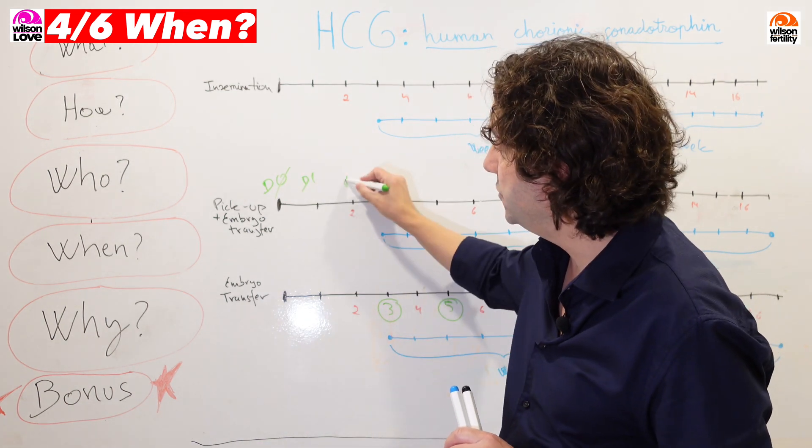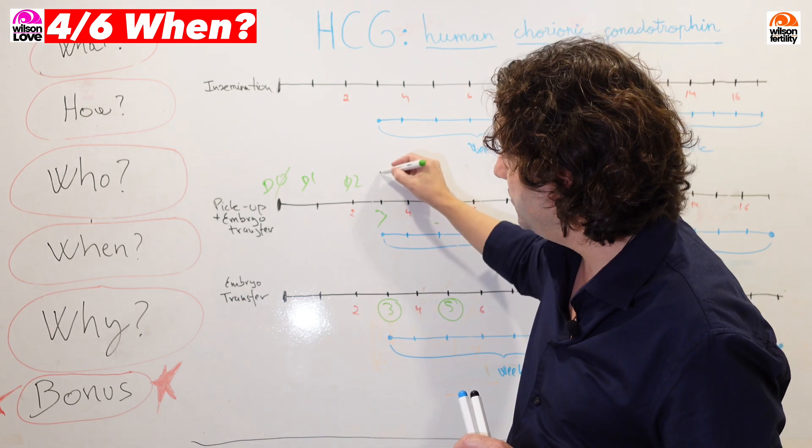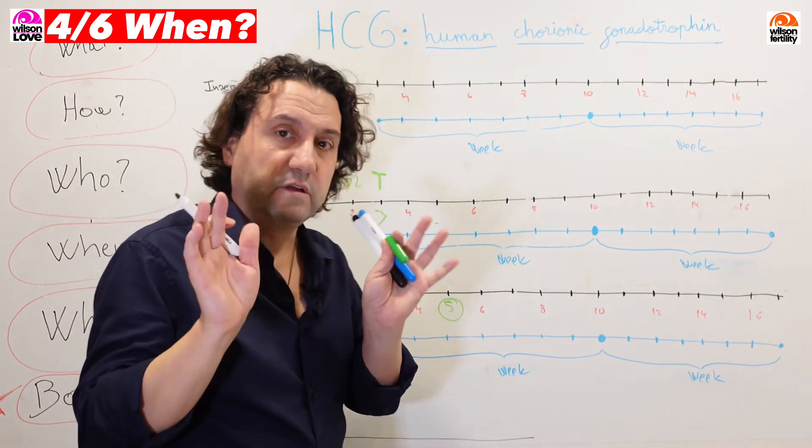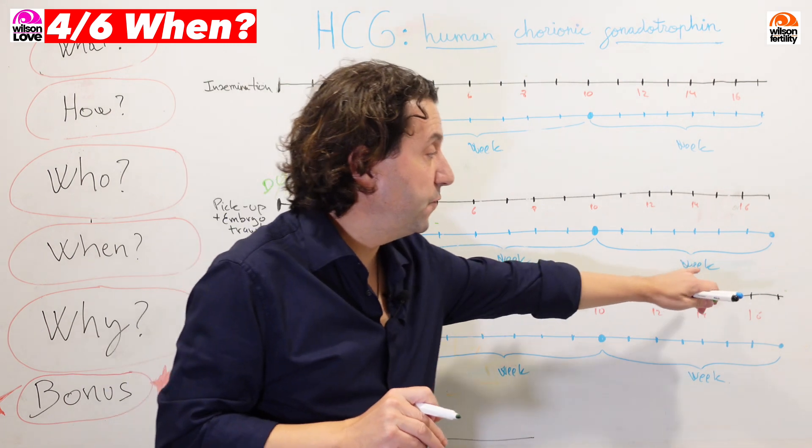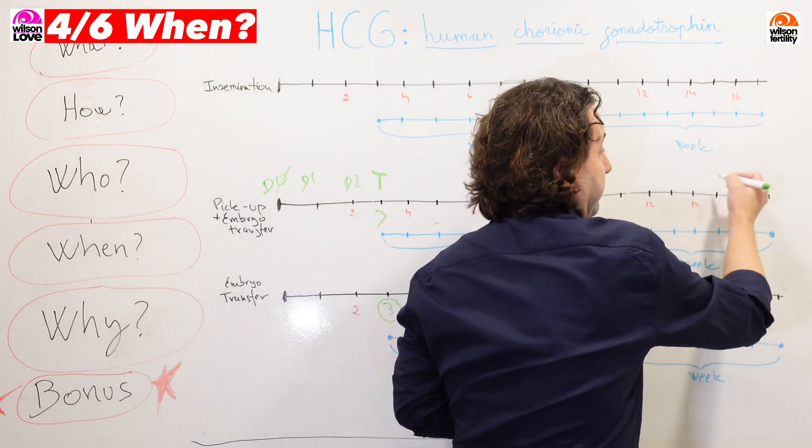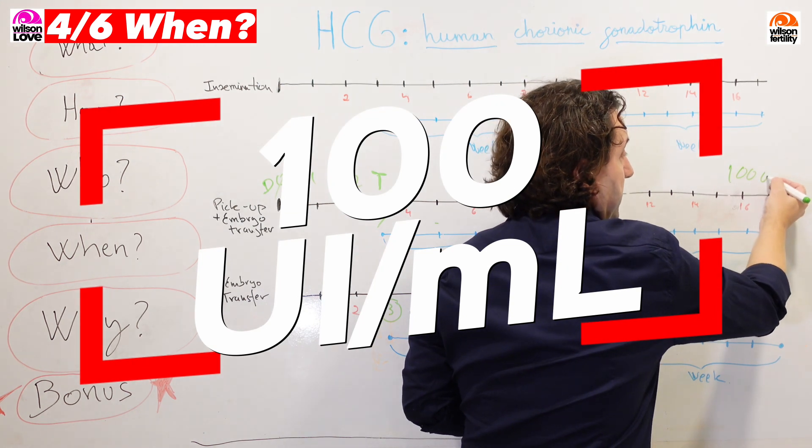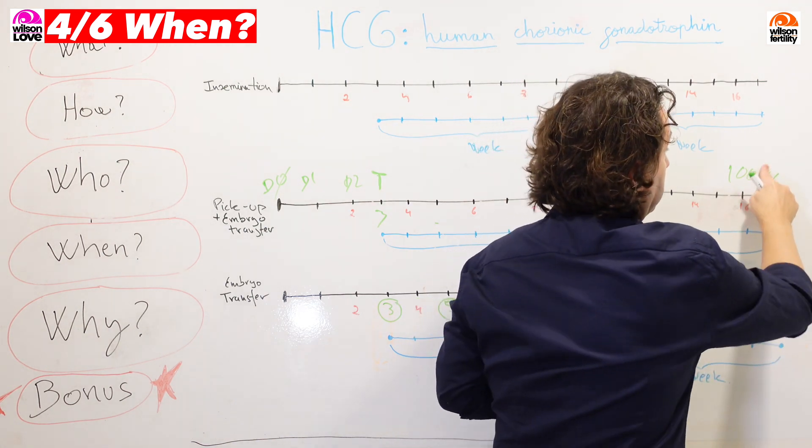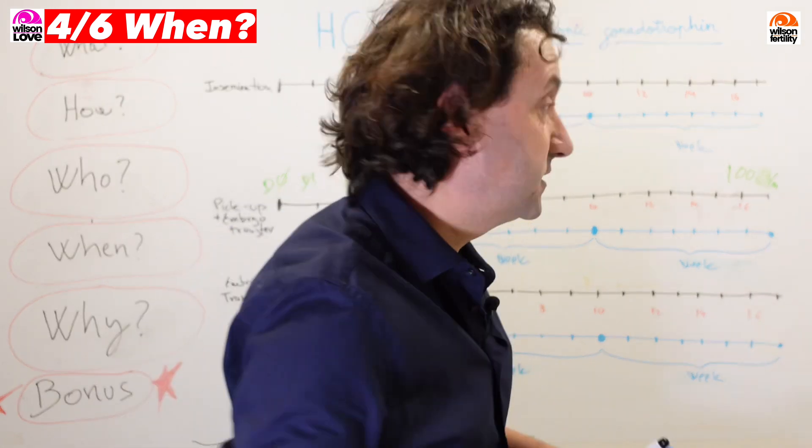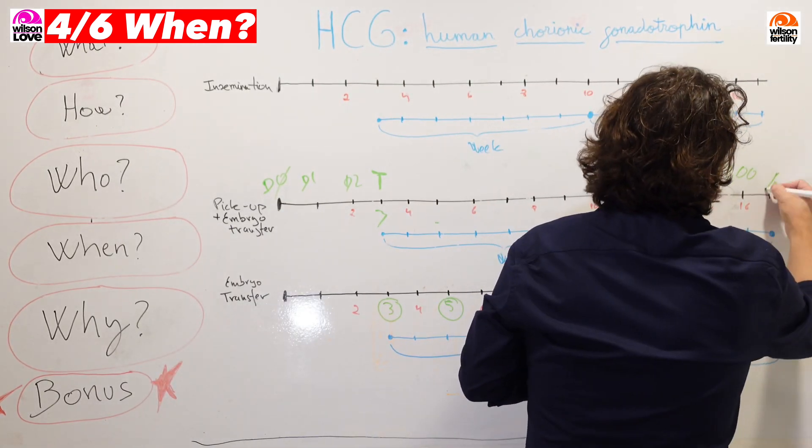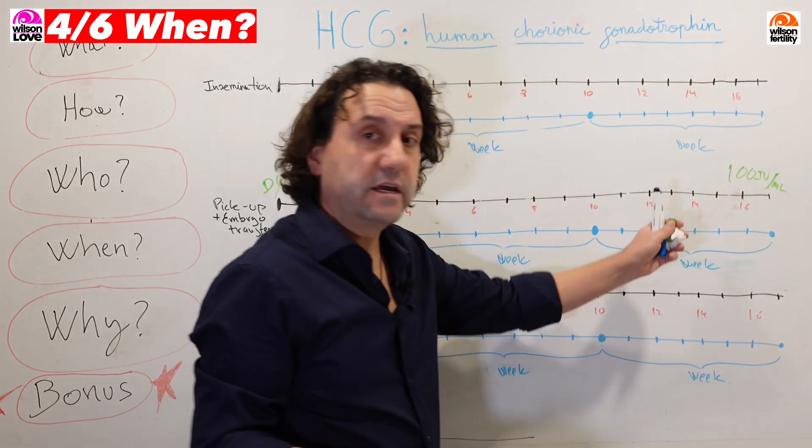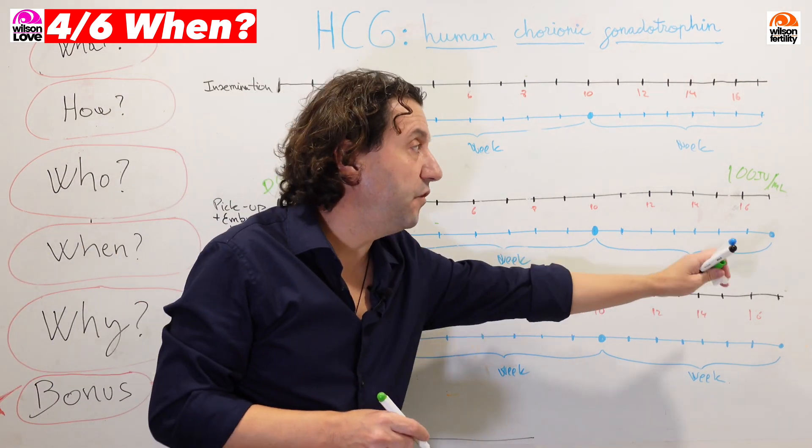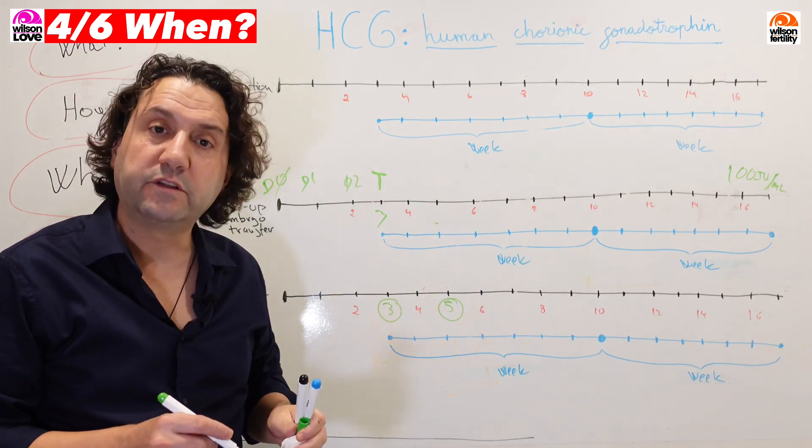This is the day one, day two, day three here. Imagine that you are going to be transferred, the embryo is going to be transferred on day three here. Then, a rule in my mind. After one week, two weeks, here, the value that you're going to find is 100 international units per ml. It's 100. The value that you're going to expect to have after two weeks of doing the embryo transfer.